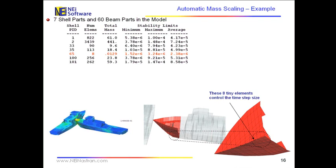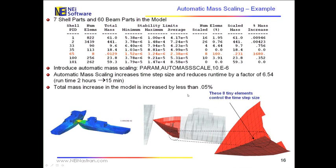Now, what we do with automatic mass scaling is we simply tell the code, we say parameter AUTOMASSCALE, and we say I know that the minimum stable time step is one and a half microseconds, but I want to use a time step of 10 microseconds.